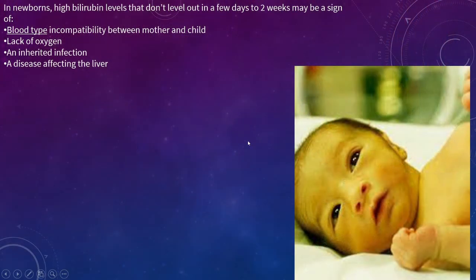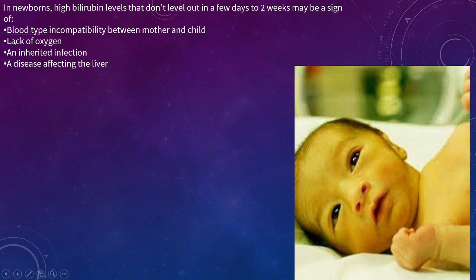In certain diseases, bilirubin levels are very high. Elevated bilirubin can be caused by conditions like hemolytic disease, ulcerative disease, infection, or Rh-incompatibility — such as a positive mother and a negative child — leading to increased bilirubin in the newborn.